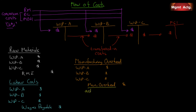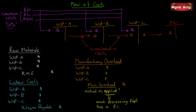Do we use actual or applied overhead? Because this is process costing and we don't track to a specific job, it turns out the majority of process costing firms still use applied overhead — because costs, especially overhead costs, are not constant throughout the year. Each processing department will have a predetermined overhead rate, the same as we did in chapter five. These are just multi-department overhead rates — don't be thrown by that.